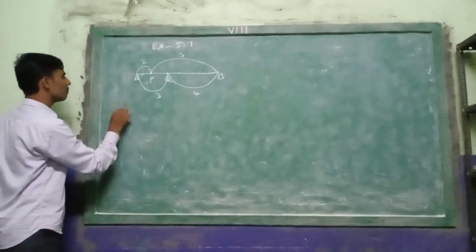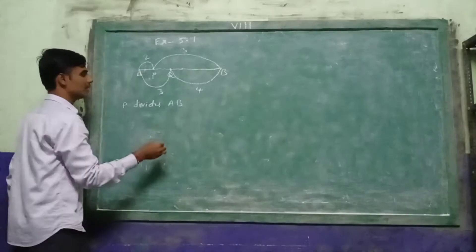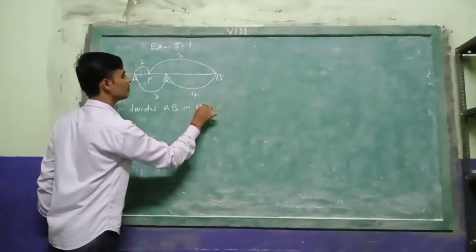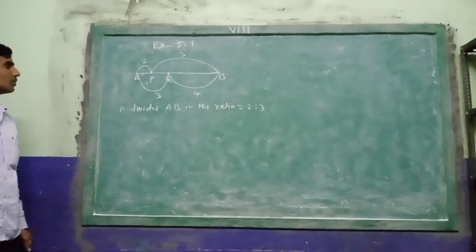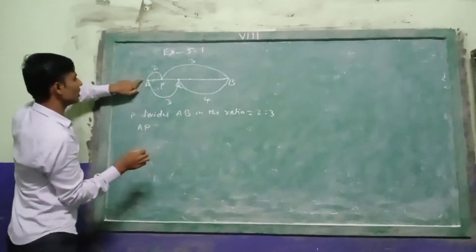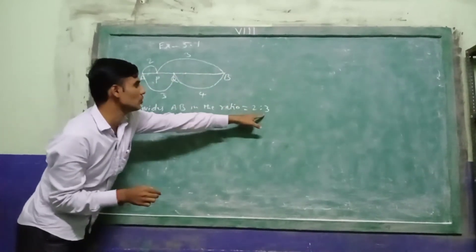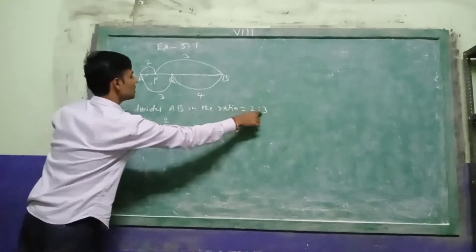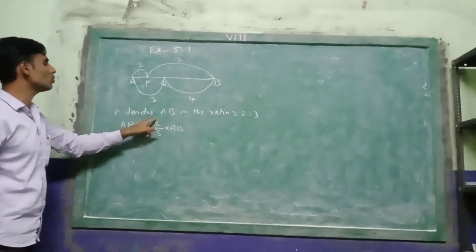P divides AB in the ratio 2 is to 3. This means AP to PB is 2 is to 3. So AP equal to 2 divided by (2 plus 3) into AB, that is 2 by 5 into AB. So AP equal to 2 by 5 into AB.